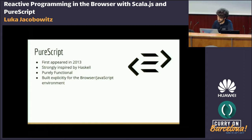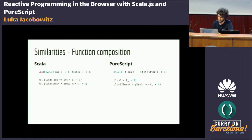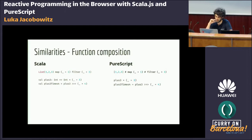Let's look at some similarities between Scala.js and PureScript. The first is function composition. On the left we have a list of one, two, three, and we map over it using a lambda where we add one to each, then filter those not larger than three. Looking at Scala and PureScript side by side, they're very similar. In Scala you can use dot notation or forgo it.